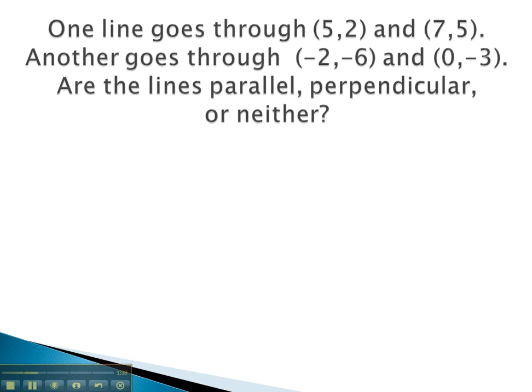In this problem, we are describing two lines. Let's look at each individually. The first line goes through the points (5,2) and (7,5).